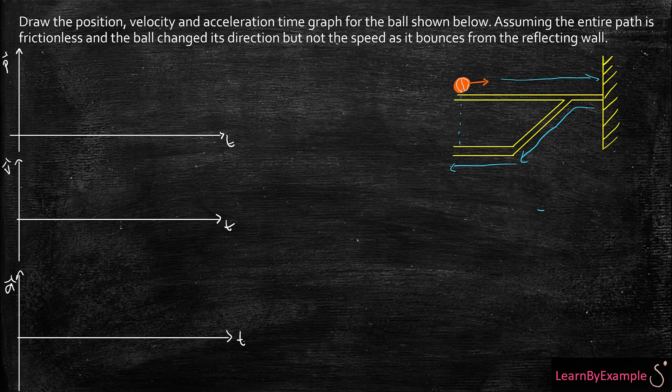For the first part, the ball is going to start rolling towards the wall with a positive velocity, so it's not going to be negative. We're going to say this is zero, this is the positive x direction, and the other direction is negative x. The ball rolls toward the wall with a constant positive velocity. That's going to look like a straight line because my position is changing at a constant rate with time.